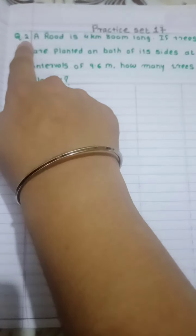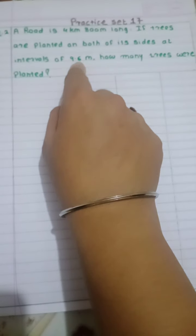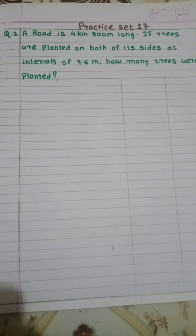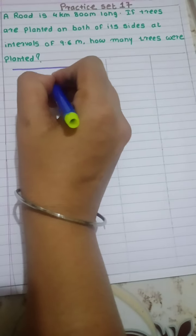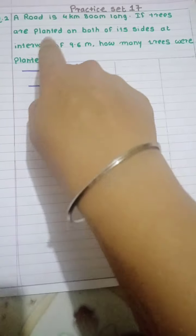Welcome back students. Now we will do question number 2 of practice set 17. A road is 4 kilometer 800 meter long. If trees are planted on both of its sides at intervals of 9.6 meter, how many trees were planted? So what is given here? A road is 4 kilometer 800 meter long. Suppose this is the road, and the trees are planted on both sides at intervals of 9.6 meter.